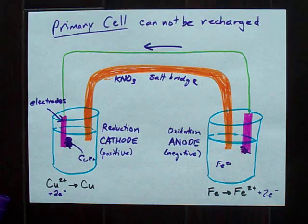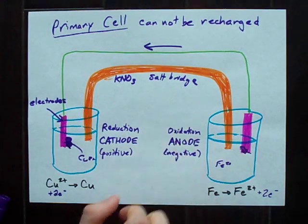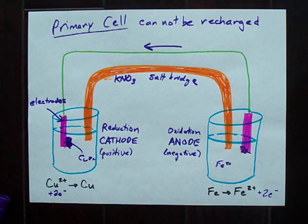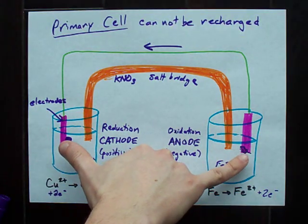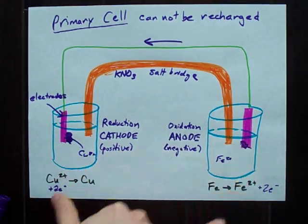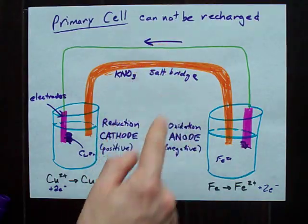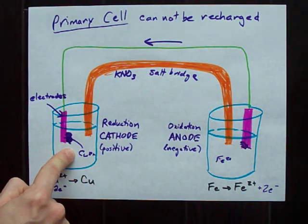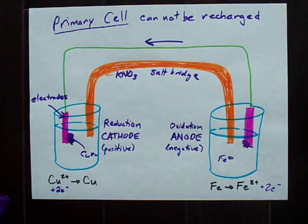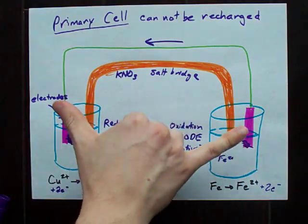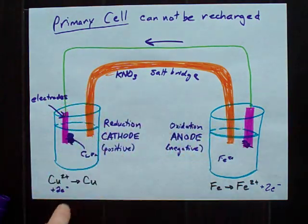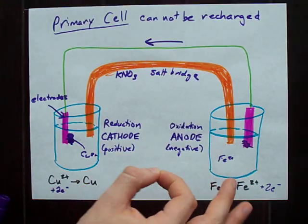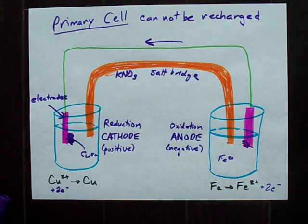Key points you need to remember: oxidation happens at the anode, reduction happens at the cathode. You always need two electrodes in your solutions. Your electrons travel from anode to cathode, i.e. negative to positive. And you can always predict which is the anode and cathode based on the chemical reaction that you're forcing to happen in these cells.